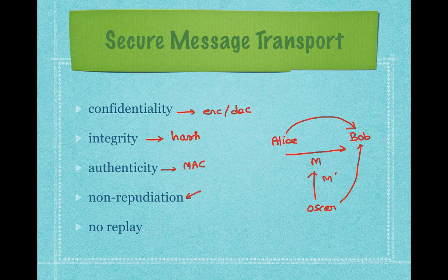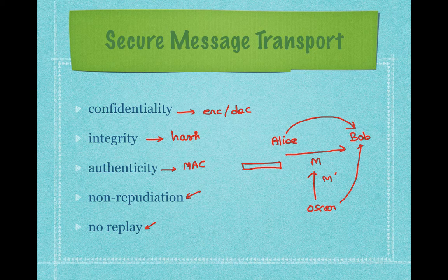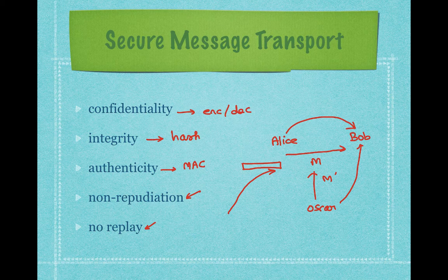The fifth property we need is called replay attack protection. Replay means an attacker can capture a valid communication happening between Alice and Bob, and later — after Alice is gone — replay this message to Bob. There are some primitives available to prevent the replay attack. So in order to perform a secure message transport, we need confidentiality, integrity, authenticity, non-repudiation, and no replay attack.